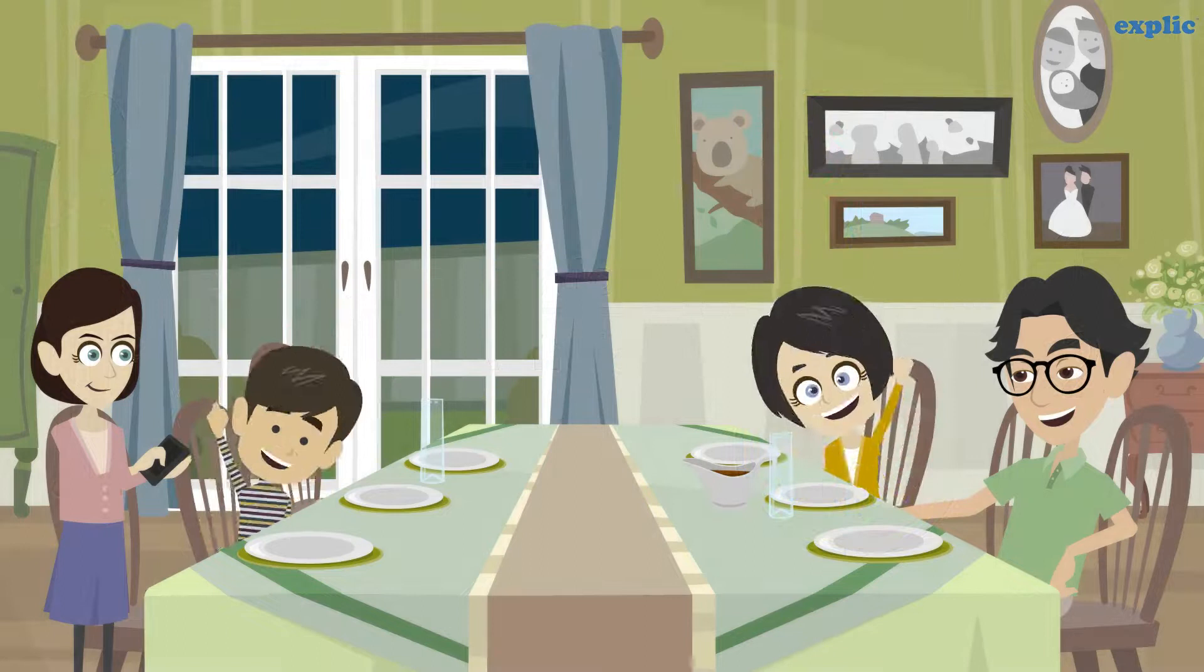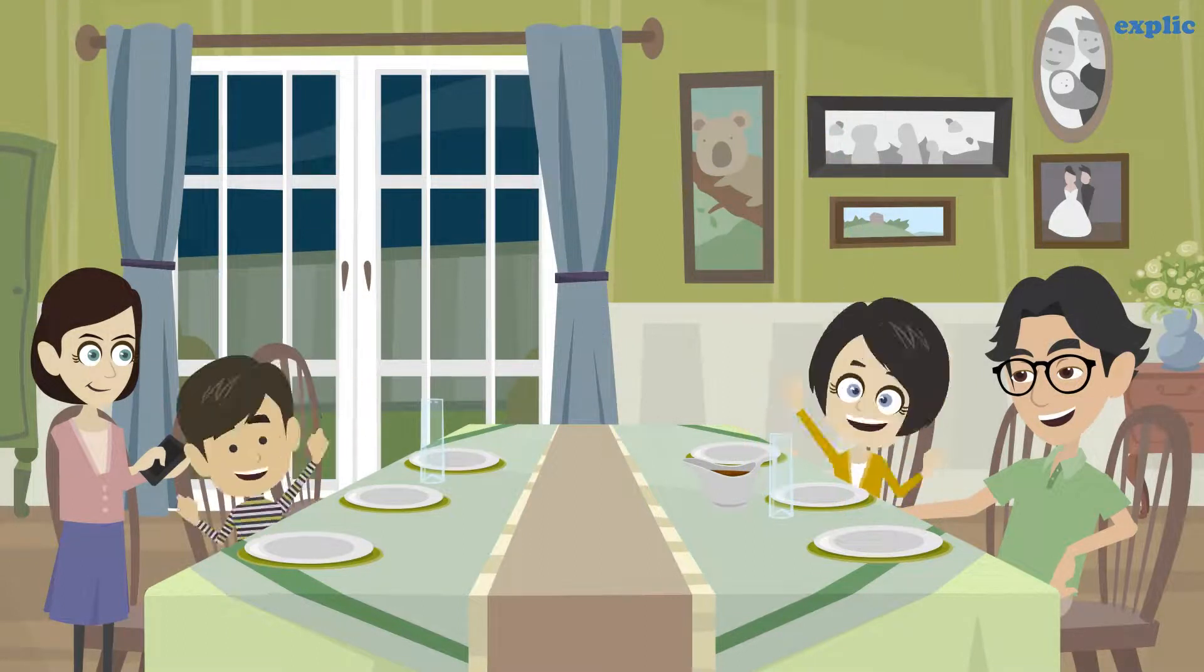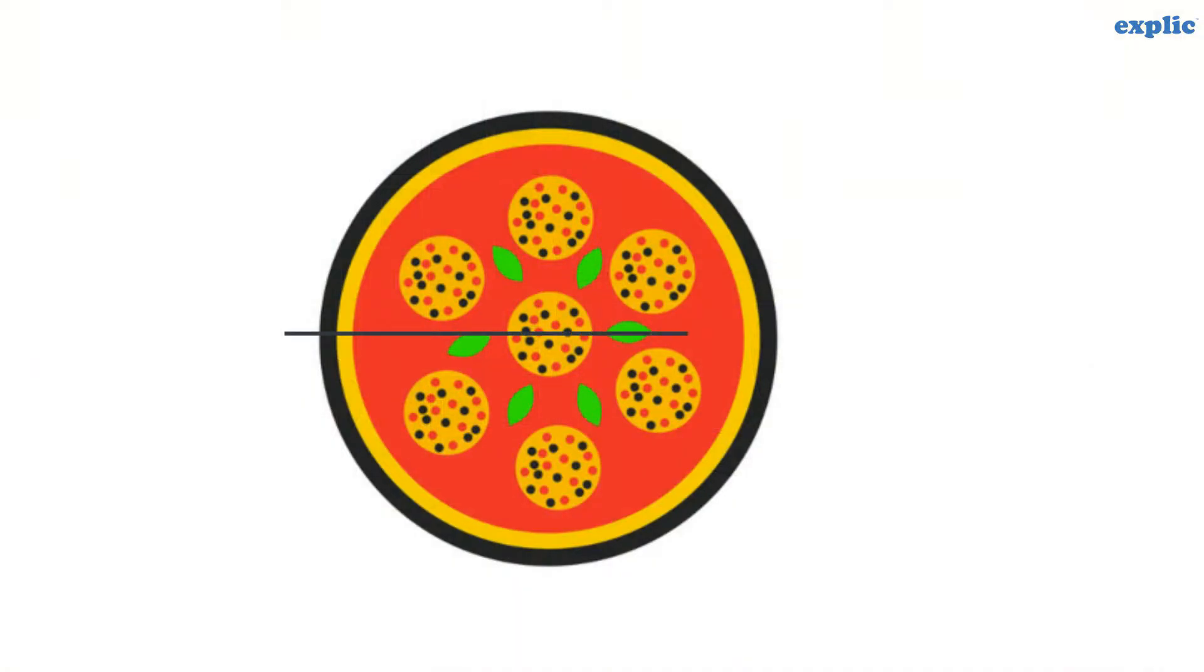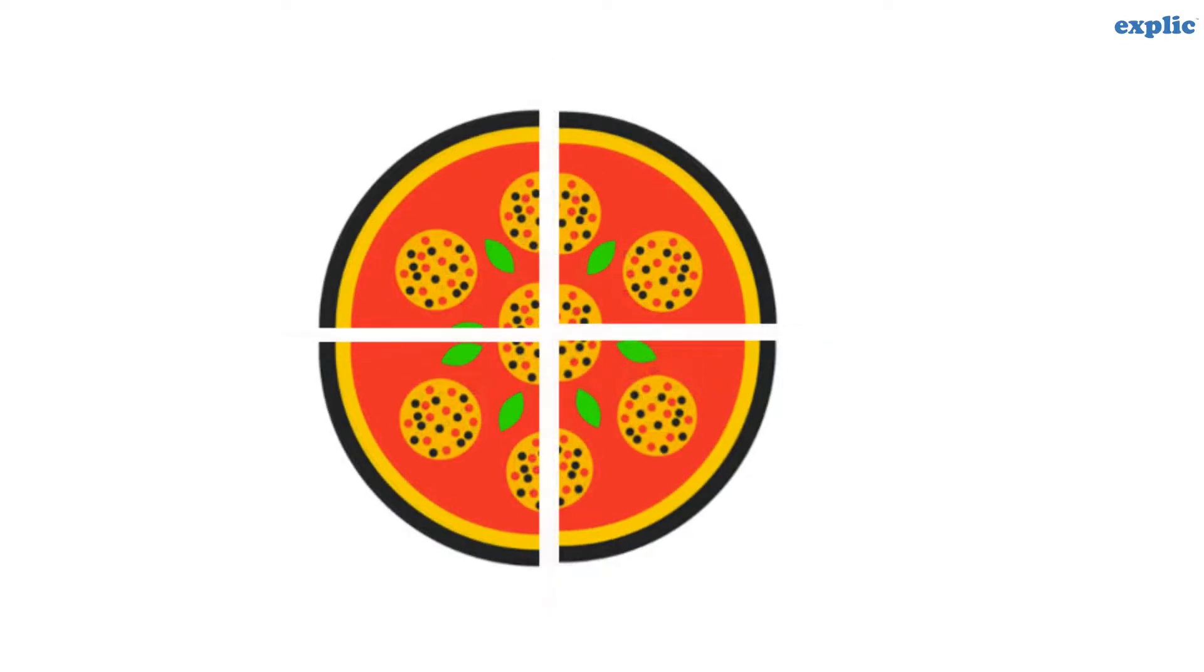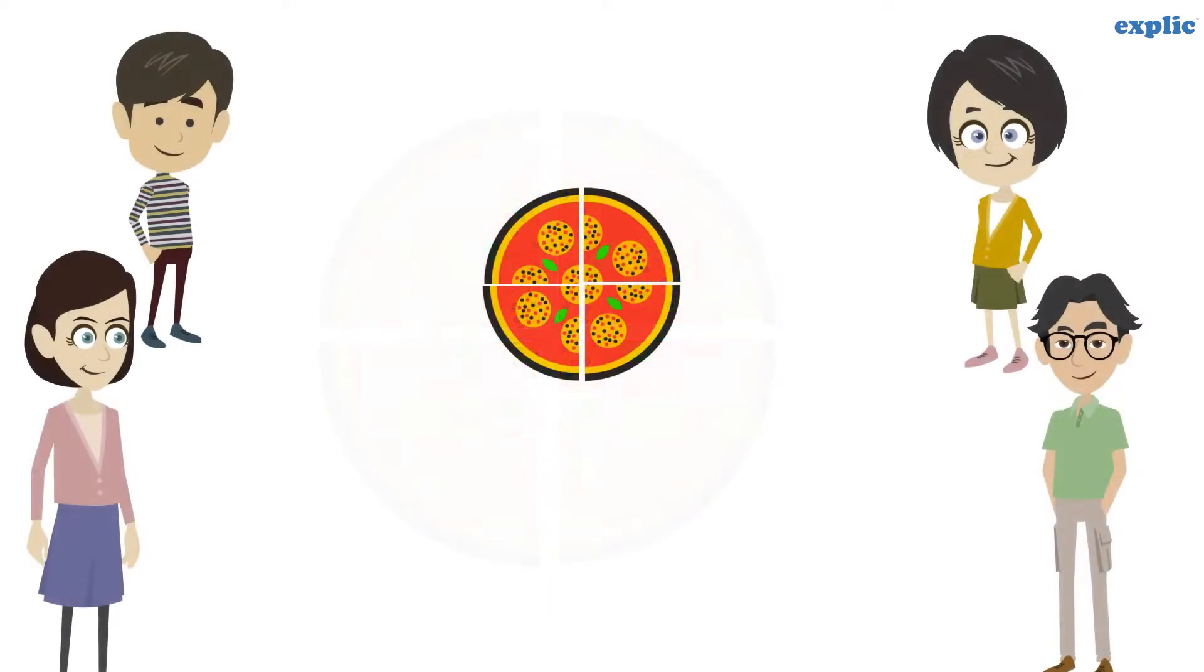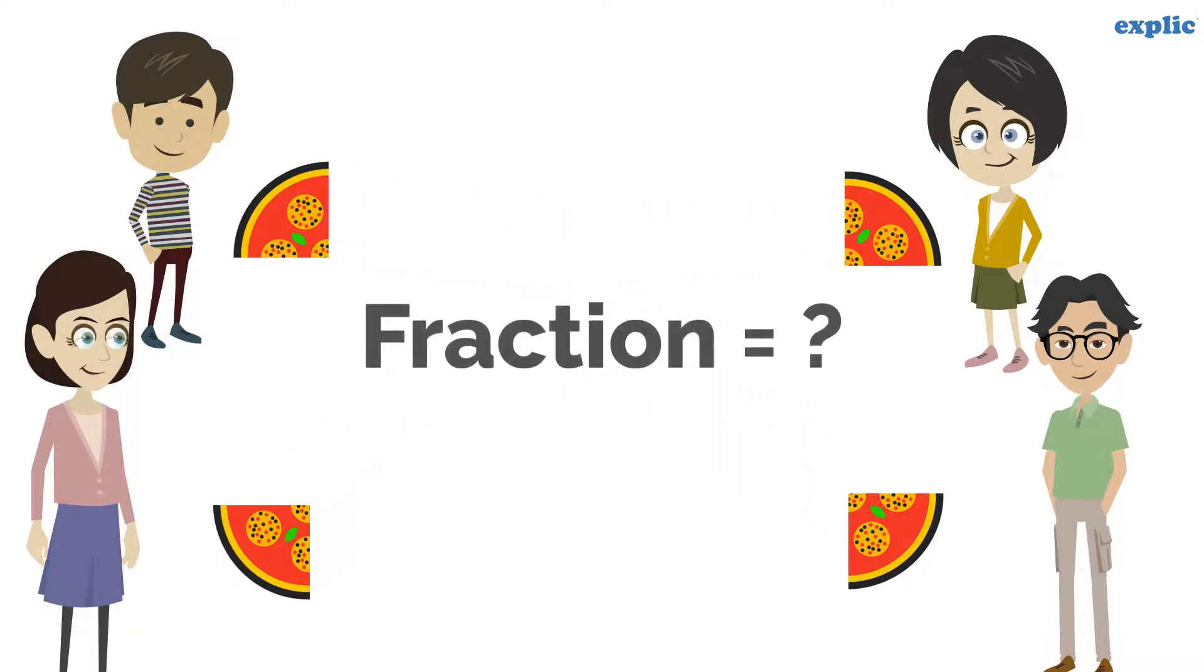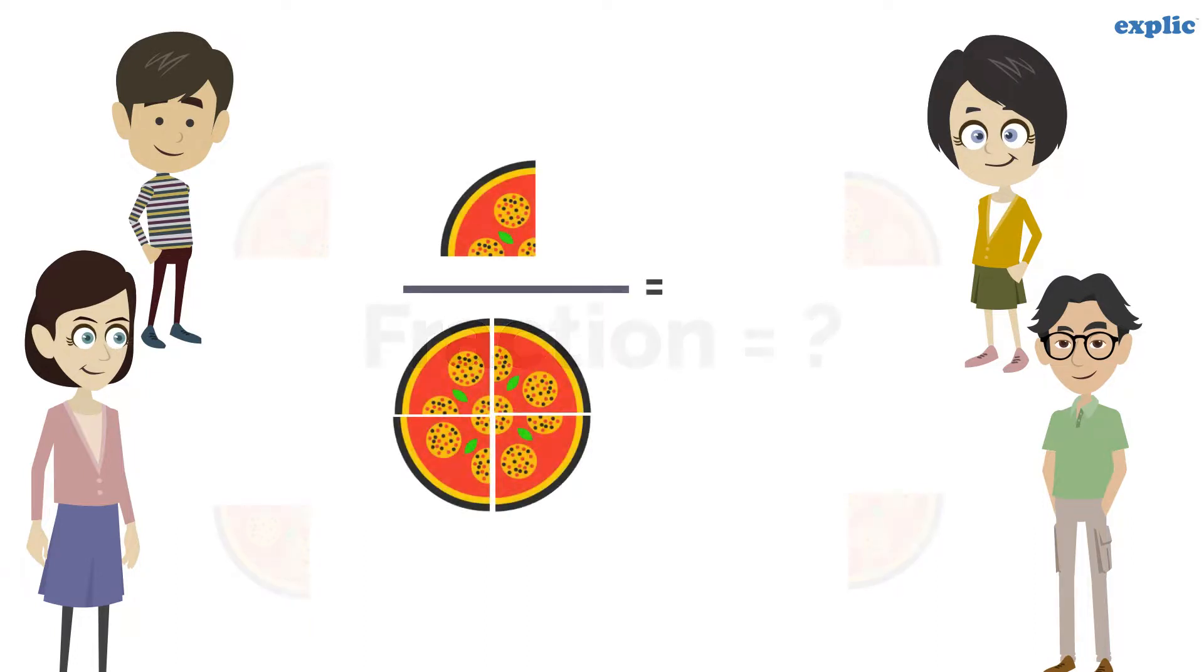Let's consider the scenario where one pizza is divided into 4 equal parts. What is the fraction of pizza each one of them got? It's 1 by 4, because each one got one slice and the total number of slices are 4.